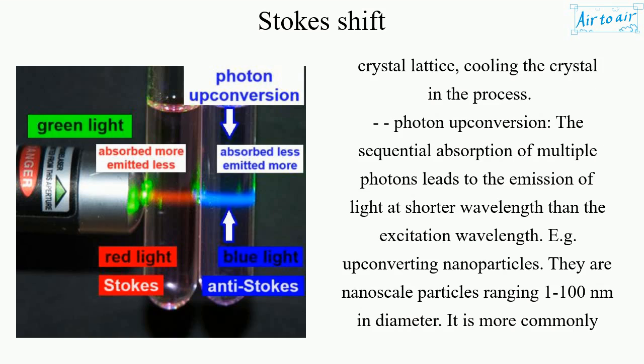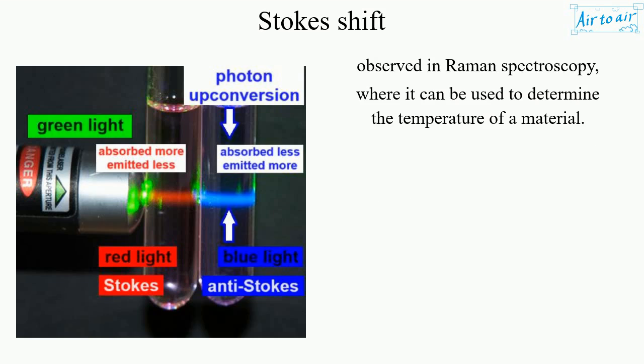Photon upconversion: the sequential absorption of multiple photons leads to the emission of light at shorter wavelengths than the excitation wavelength, e.g. upconverting nanoparticles — nanoscale particles ranging from 1 to 100 nanometers in diameter. It is more commonly observed in Raman spectroscopy, where it can be used to determine the temperature of a material.